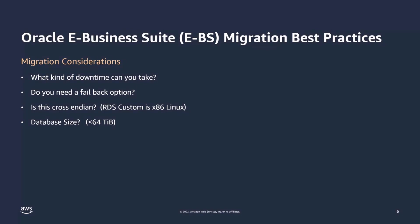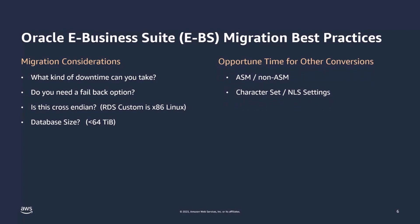Are we doing a cross-endian migration? RDS Custom is running on x86 Linux, so if you're coming from HP-UX or AIX, you may need to do a cross-endian migration, which would limit which technology you could use. Another key aspect is database size — RDS Custom for Oracle today only supports databases up to 64 terabytes. Also consider whether now is an opportune time to switch from ASM to non-ASM, or to change character sets and NLS settings, such as switching from Western European 8 to AL32.